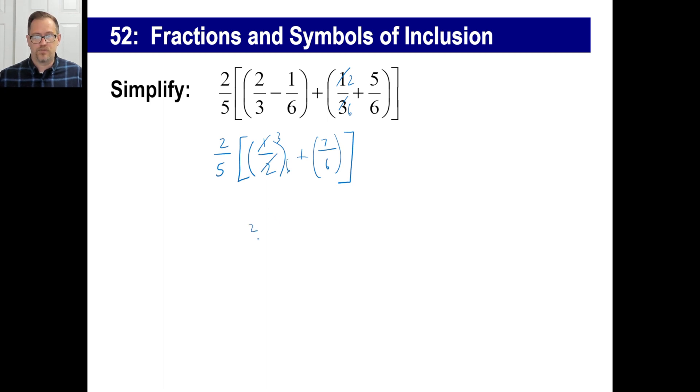One-half is going to be three over six, right? So we'll have two-fifths still on the outside. And our brackets, three-sixths plus seven-sixths is ten-sixths, right? Let's reduce that. That'll be five over three, right? Two goes into both.